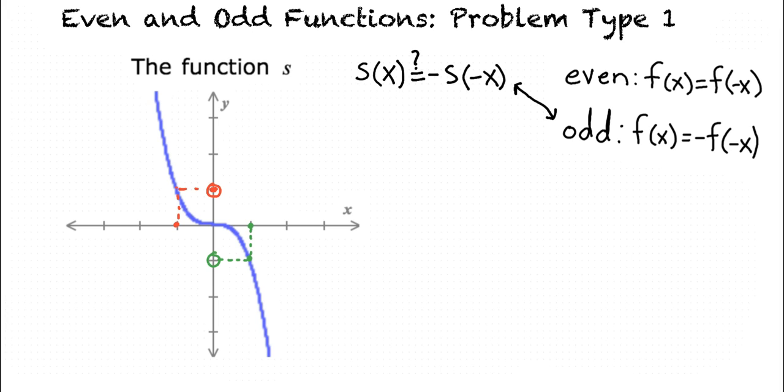We know if an equation is an even function if f(x) equals f(-x), or if the graph has symmetry across the y-axis. We know that a function is odd if f(x) equals negative f(-x), or if the graph has rotational symmetry about the origin. Sounds like you understand even and odd functions.